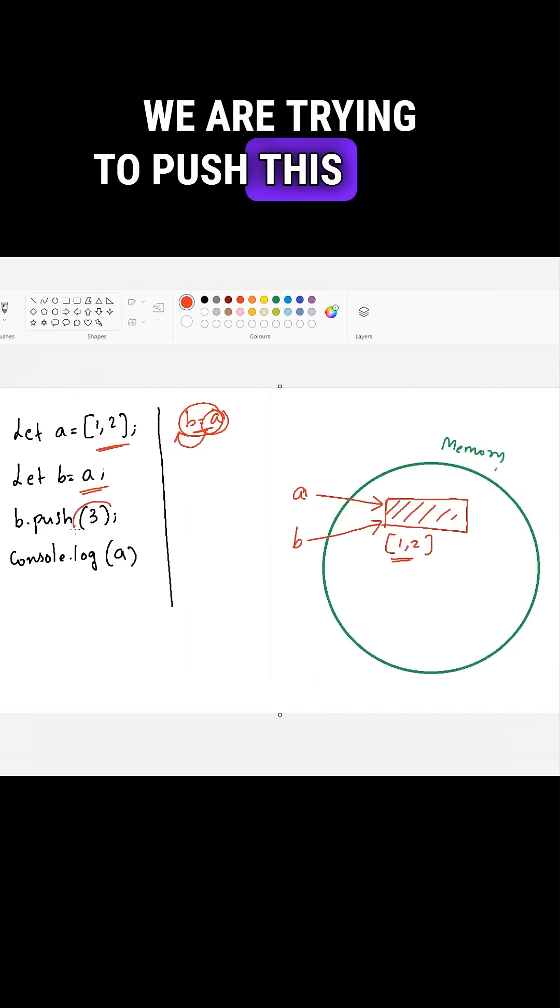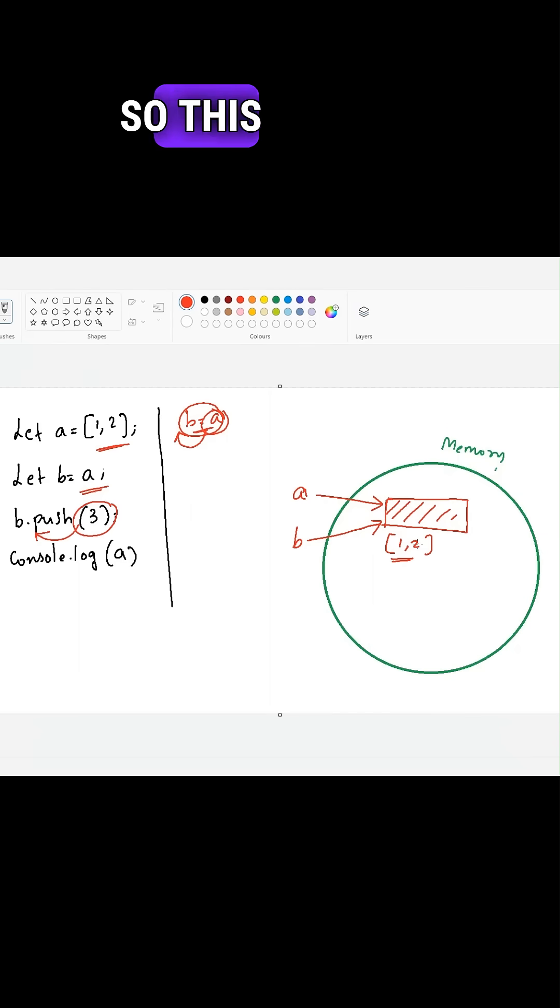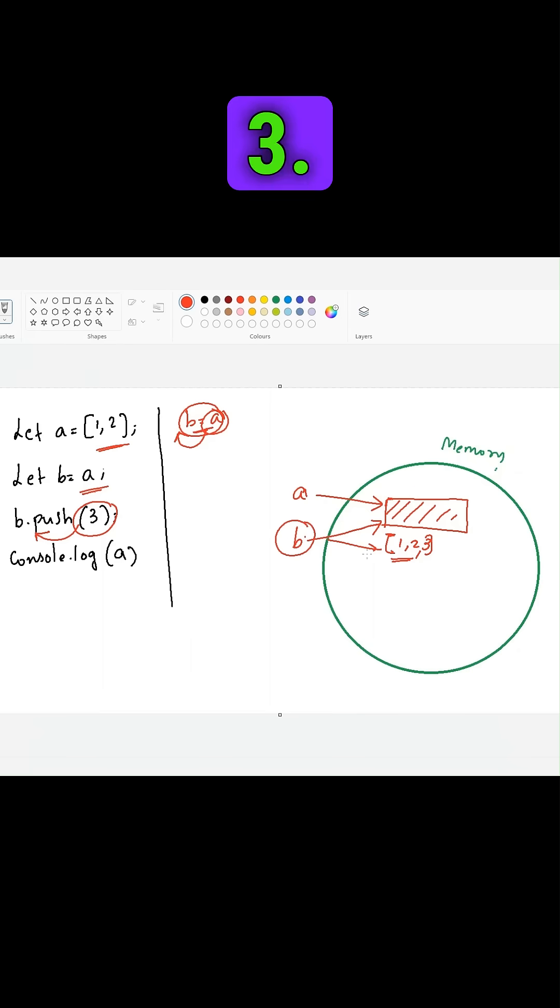In the third line, we are trying to push this value three into this array B. So this will add this three into array B. Now the value of B will become one comma two comma three.